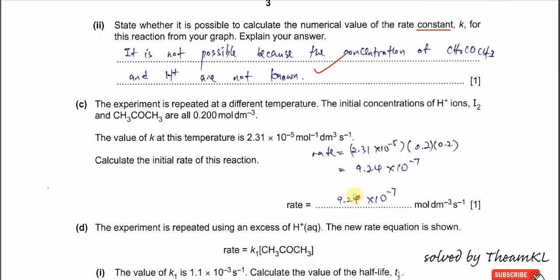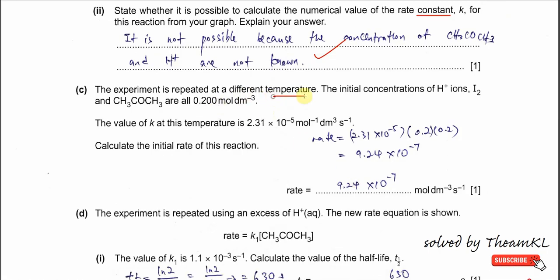Part C: the experiment is repeated at a different temperature, so k is now different. The initial concentration of all reactants is 0.2 mol dm⁻³. Substituting the given concentrations and the new k constant into the rate equation gives a rate of 9.24 × 10⁻⁷ mol dm⁻³ s⁻¹.